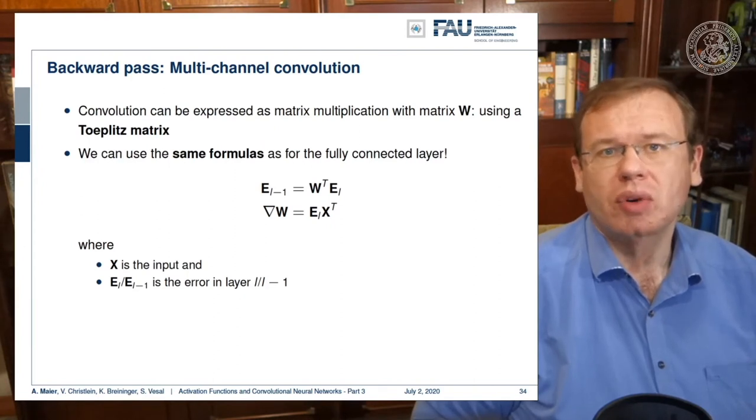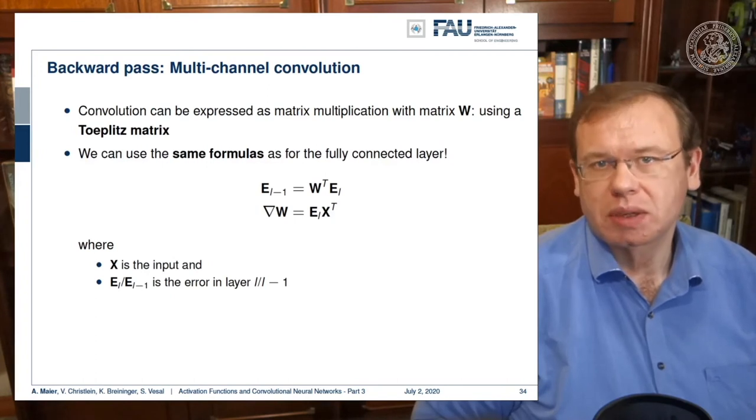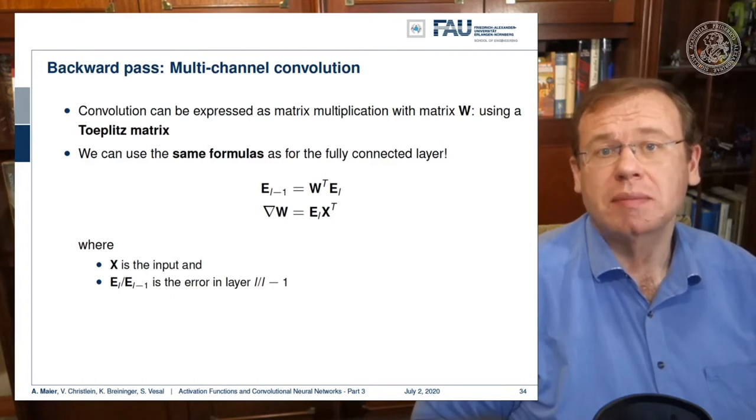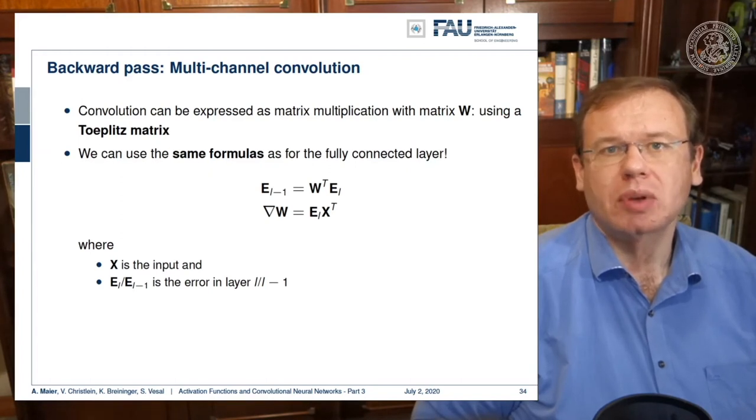So this gives us a circulant matrix, and it means that we can stay in the domain of matrix multiplication. Our convolution can be implemented as matrix multiplication, and therefore we simply inherit the same formulas as for the fully connected layer. If we want to backpropagate the error, it's simply W transpose times the input error from the backpropagation.